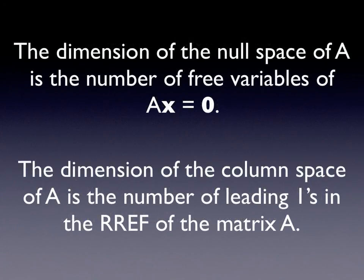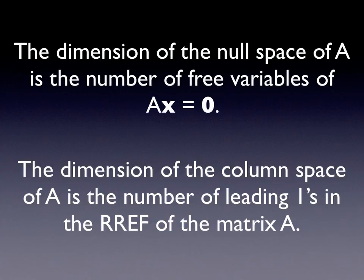The dimension of the null space of A is the number of free variables of Ax = 0. If you solve that homogeneous system and there are infinitely many solutions, you will have free variables, and the dimension of the null space will always equal the number of free variables. The dimension of the column space of A is the number of leading ones in the reduced row echelon form of A — those are the columns that are not linear combinations of the others. Similarly, the number of leading ones in the reduced row echelon form also gives the dimension of the row space.